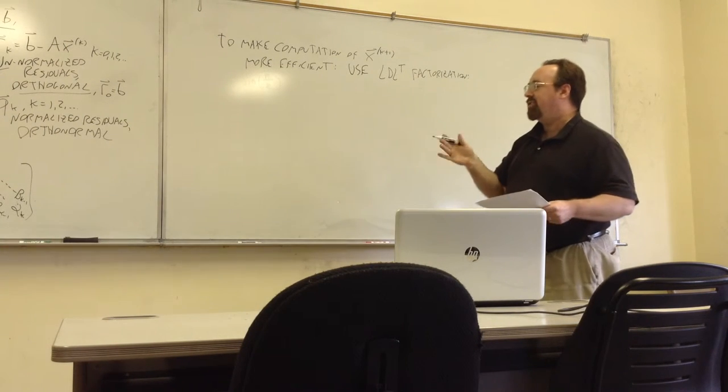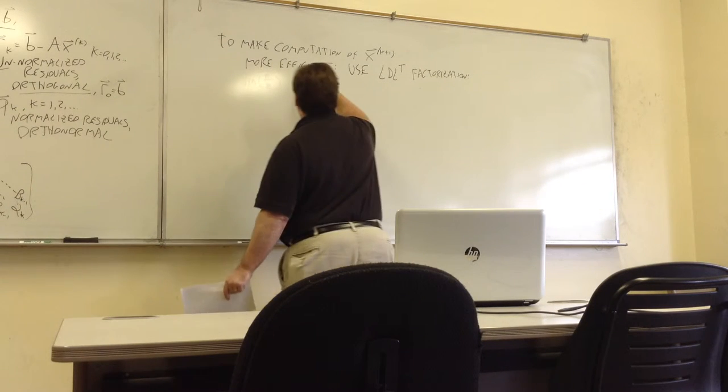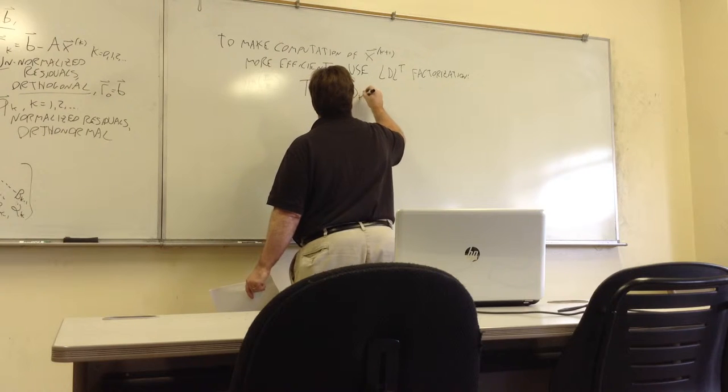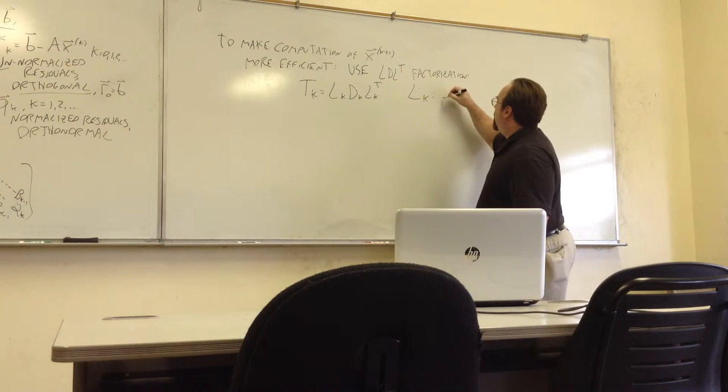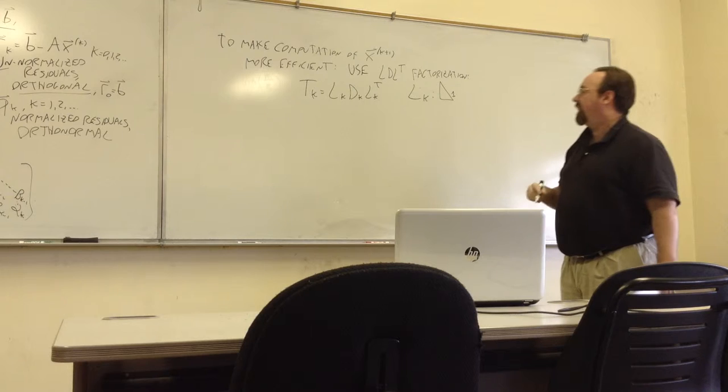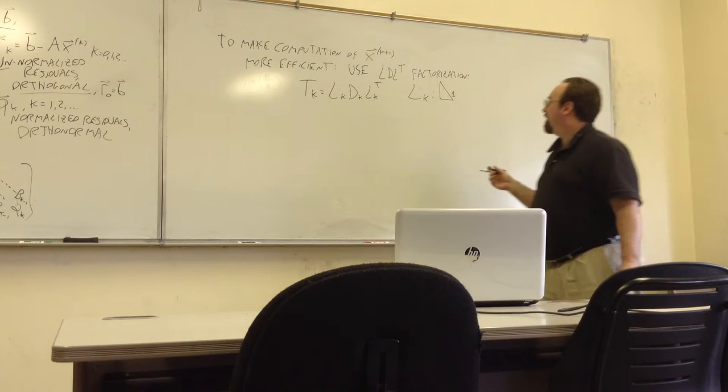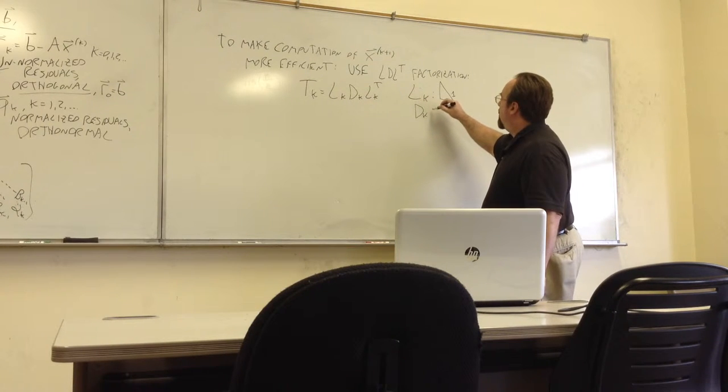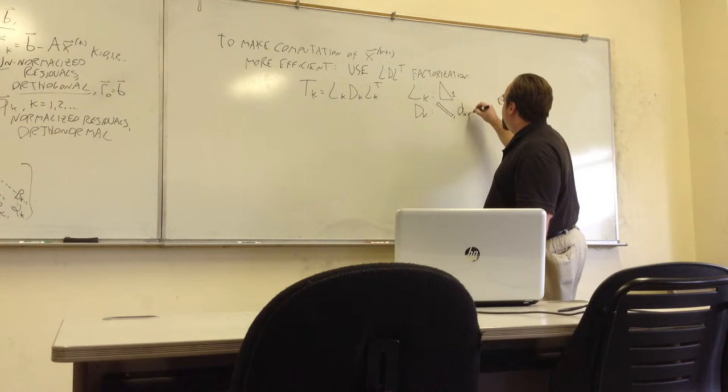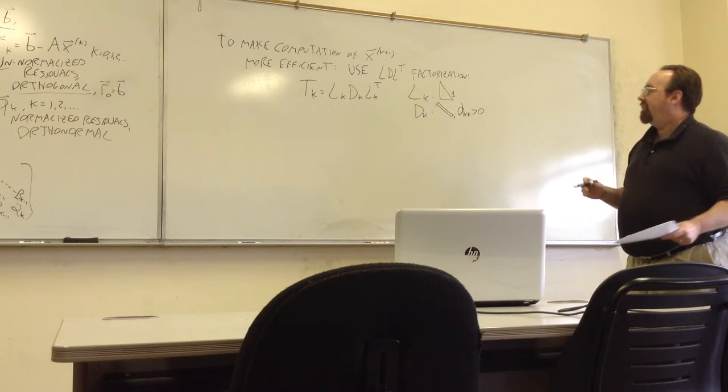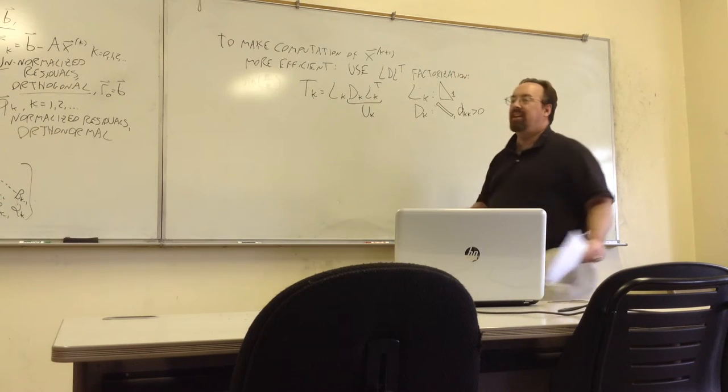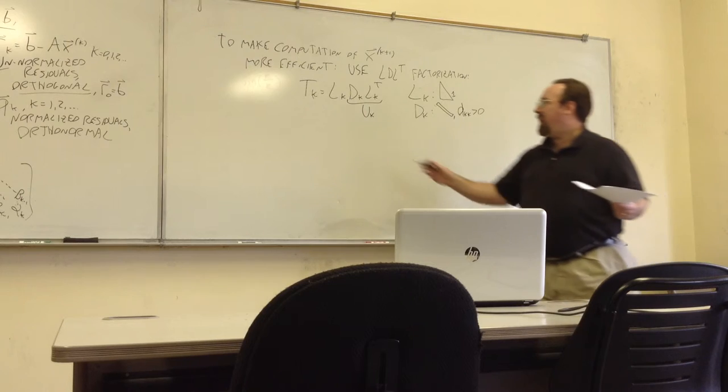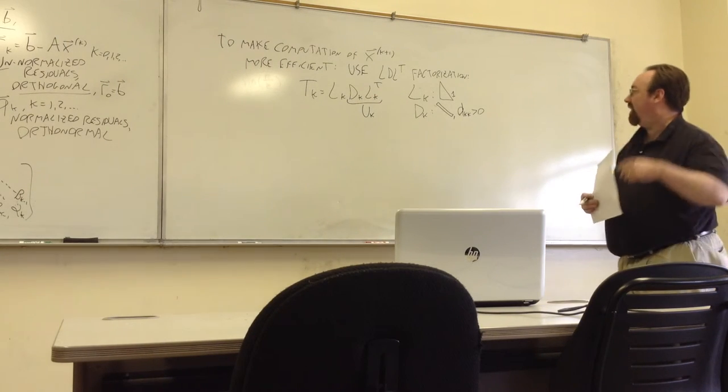Because TK is symmetric positive definite, it does have this kind of factorization. TK, I'll write it as LK, DK, LK transpose, where LK is a unit lower triangular matrix, and it has all ones in the diagonal. And then DK is a diagonal matrix, and each diagonal entry is positive. You could think of this, if I lump this together as UK, then it's like taking an LU factorization and just separating the diagonal part.